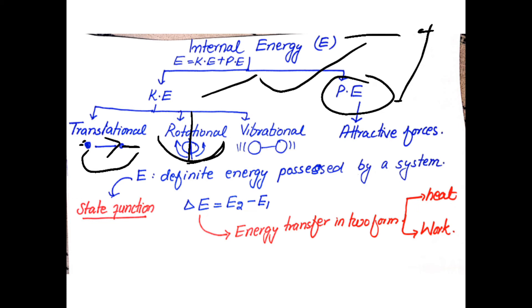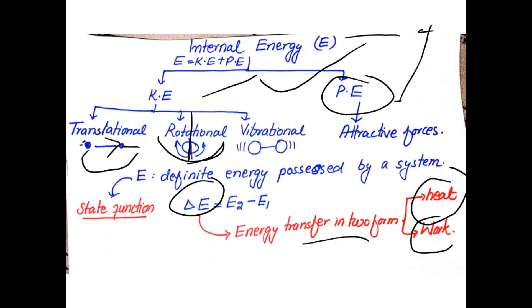Internal energy is the sum of kinetic energy plus potential energy. It is represented by E and is also a state function — it depends upon the initial and final state. We cannot directly observe absolute internal energy of a system, but we can determine the change in internal energy. Energy transfer occurs in two forms: in the form of heat and in the form of work.